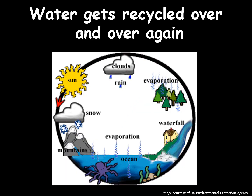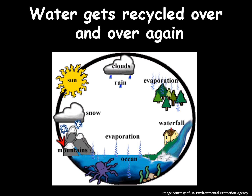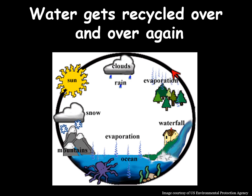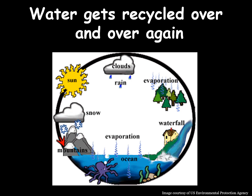Water gets recycled over and over again. Today, we are going to talk about how the water from billions of years ago has been recycled by the Earth and is being used by each one of you today. The process of the Earth recycling water is called the water cycle. As water goes through this process, it changes states. The three states or forms of water are solid, liquid, and gas.